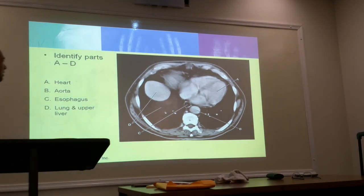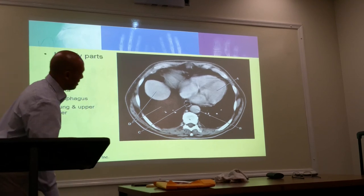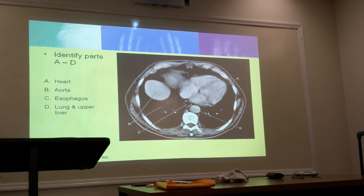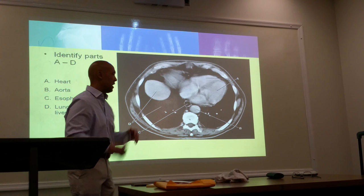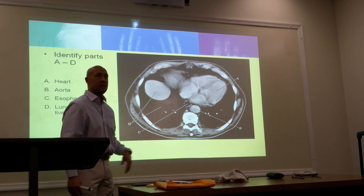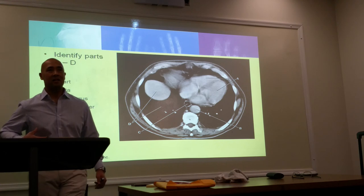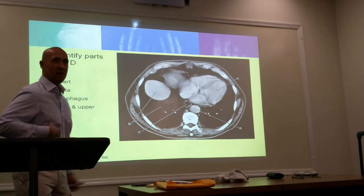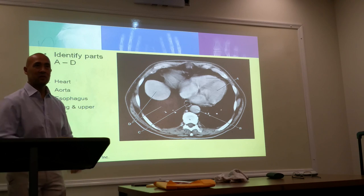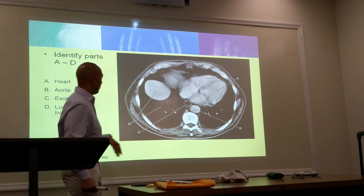Here's another cross-section, a CT cross-section of T7. A is the heart. What's D? It's on the right side, right below the diaphragm — the liver. So this is the liver, this is the section of the liver.